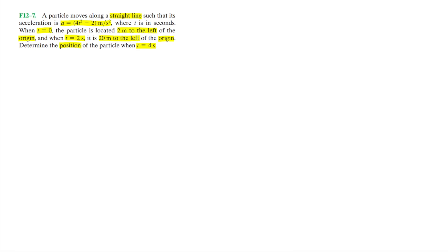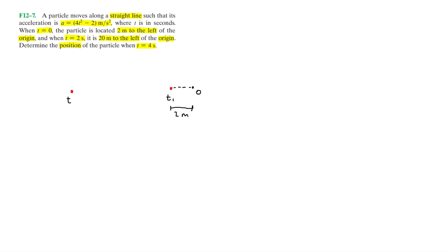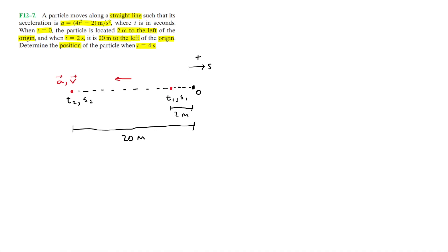To help visualize what's going on, I'll draw a quick sketch. Here is the origin, and this red dot is the particle at the first position at t₁, which is 2 meters to the left of the origin. Further out to the left we have the second position at t₂, where s represents position. The particle moves in a straight line, and I'll define the s-axis as positive to the right. The distance from the second position to the origin is 20 meters.